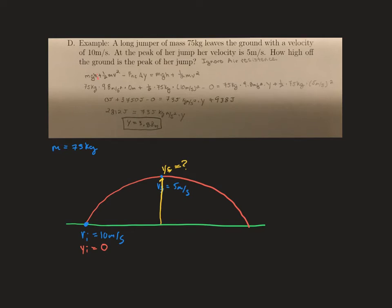Then we need to do our initial kinetic energy. So we're going to take 1 half times the mass times the initial velocity squared.